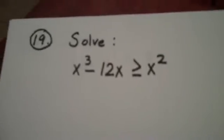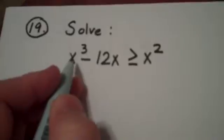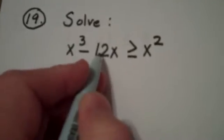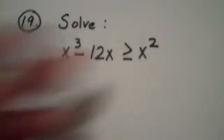All right, ladies and gentlemen, let's look at problem number 19: x cubed minus 12x is greater than or equal to x squared.